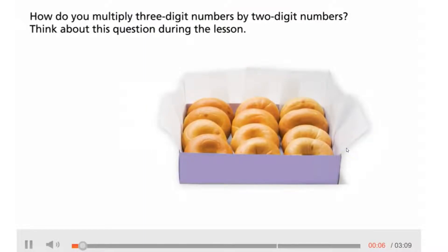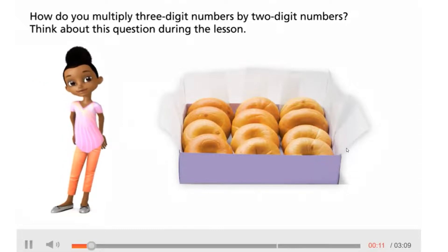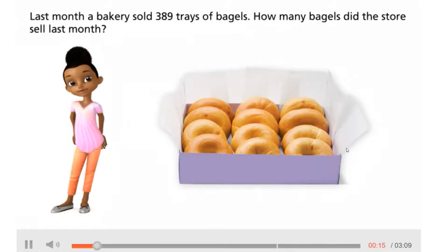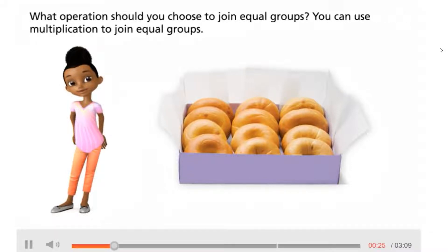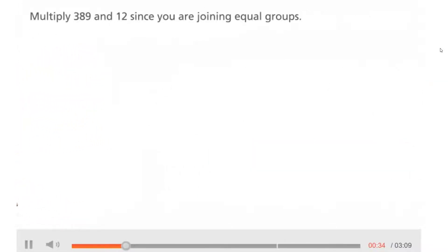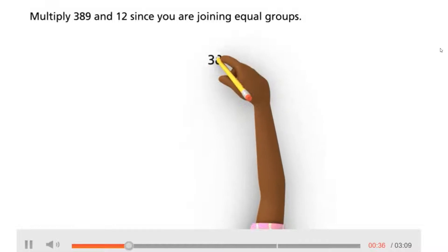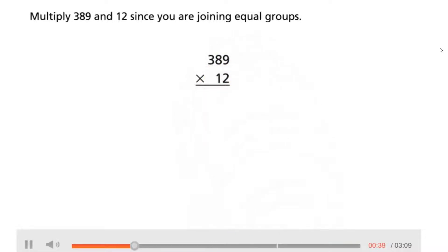How do you multiply three-digit numbers by two-digit numbers? Think about this question during the lesson. Last month a bakery sold 389 trays of bagels — how many bagels did the store sell last month? To join equal groups, you can use multiplication. So we'll multiply 389 and 12 since we are joining equal groups.